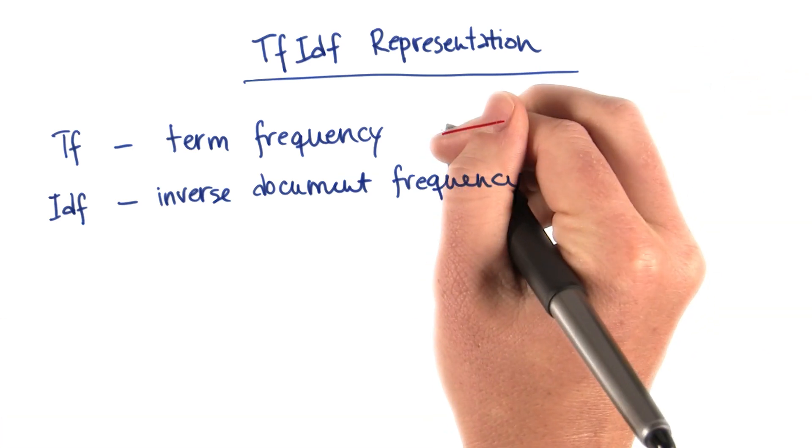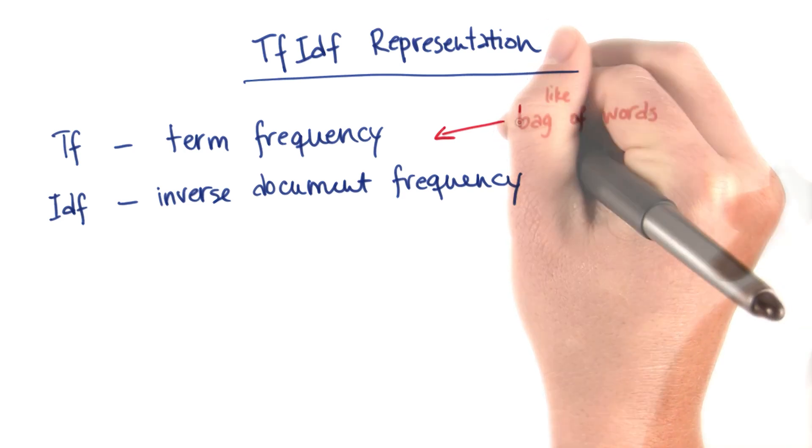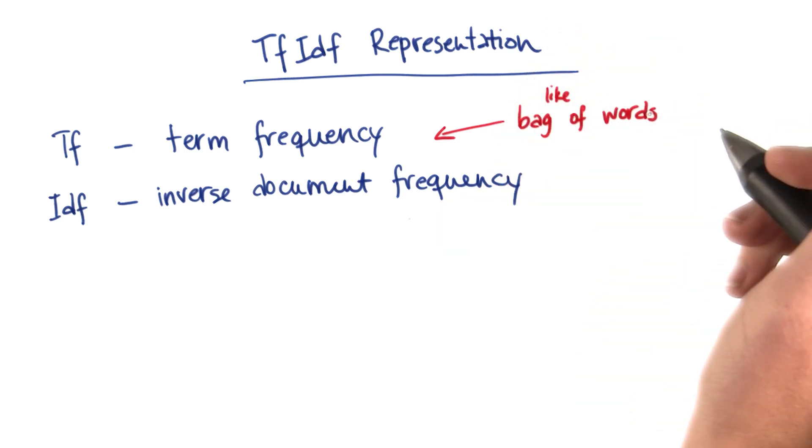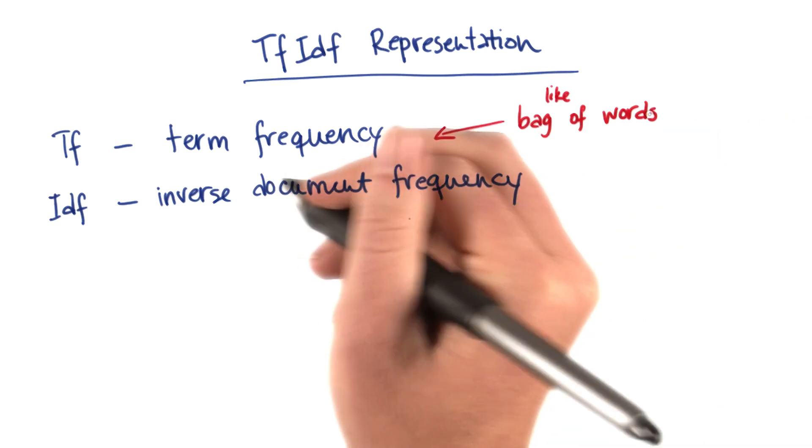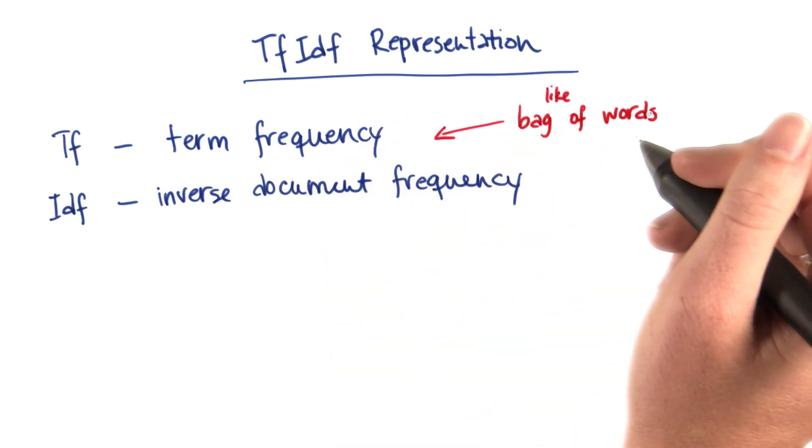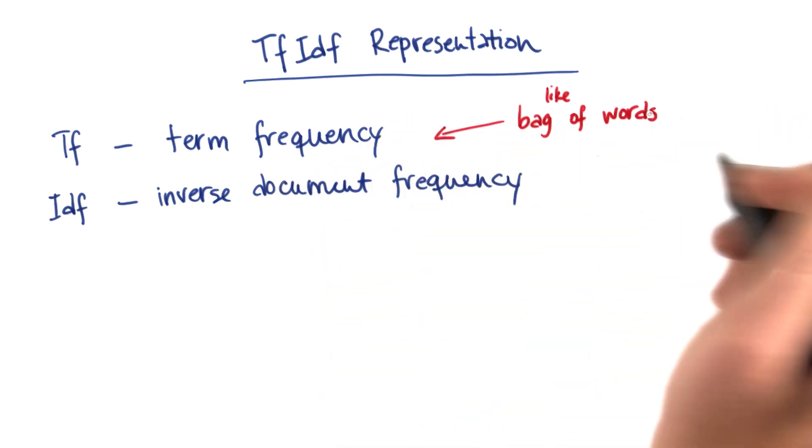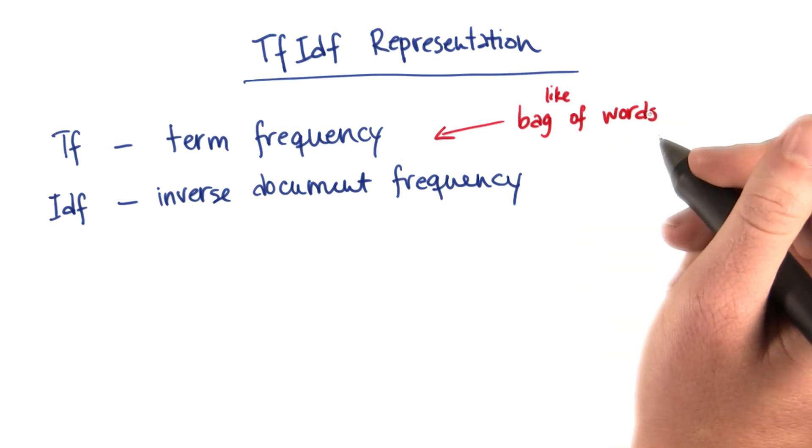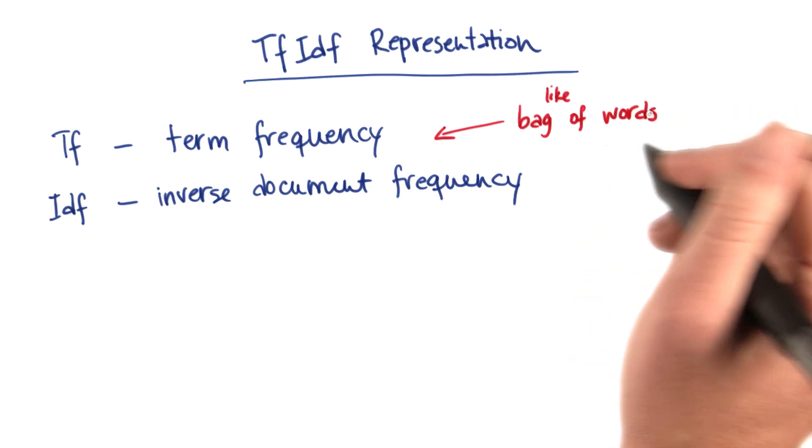The term frequency part is very similar to the bag of words. What this means is that each word is going to be up-weighted by how often it occurs in a document. Just like it is in bag of words, if you have a word that occurs 10 times, it's going to have 10 times as much weight as a word that occurs only once.